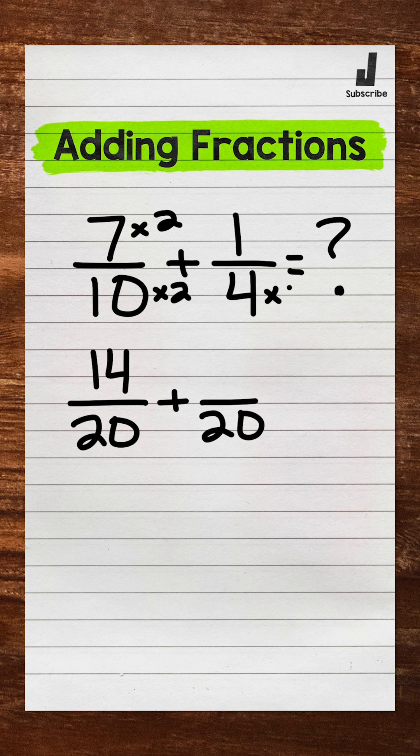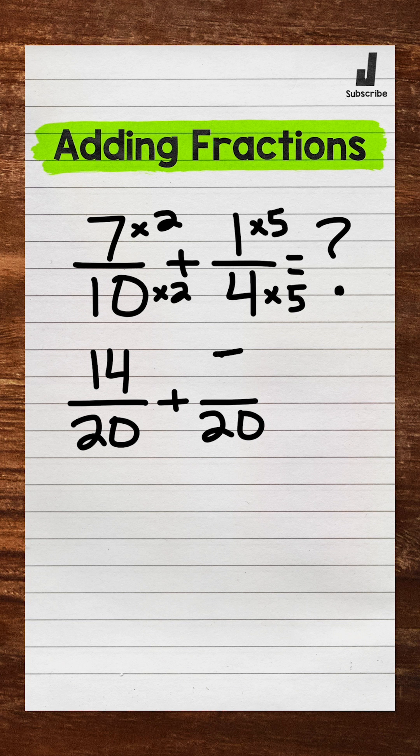Now for 1 fourth. How do we get 4 to equal 20? 4 times 5. Whatever we do to the bottom, we must do to the top. 1 times 5 is 5.